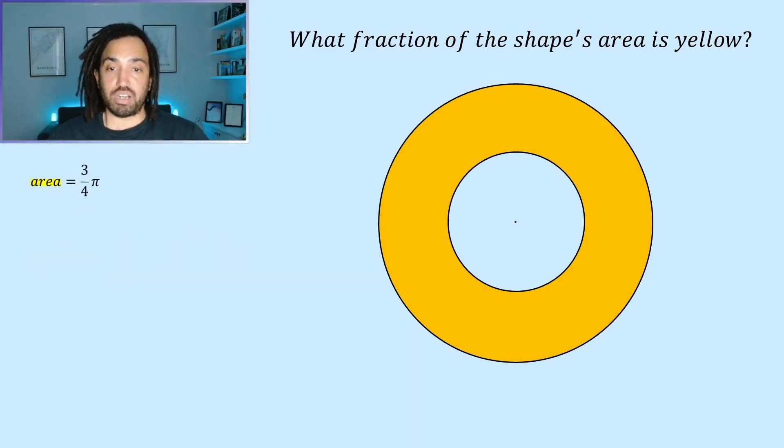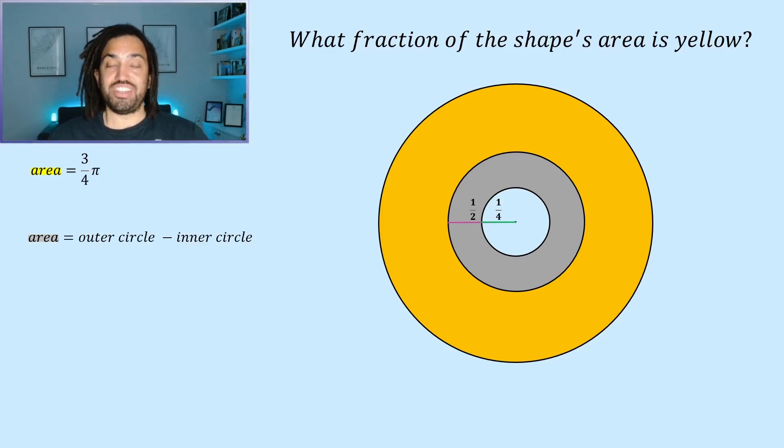So I'll park that and then I'll work out the area of the next ring. So the grey ring's outer circle has a radius of a half and its inner circle has a radius of a quarter. So using the same formulas as before the area of the grey ring is pi times a half squared minus pi times a quarter squared which gives a quarter pi minus a sixteenth pi and that leads to an area of three sixteenths pi.